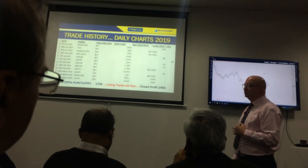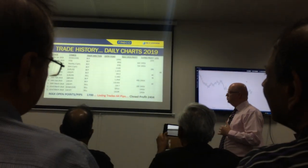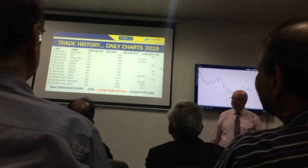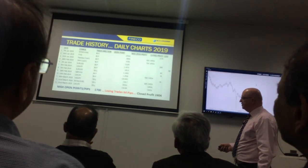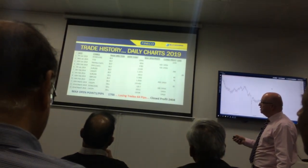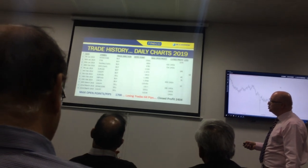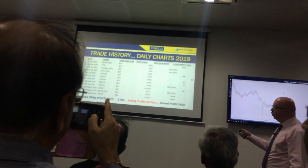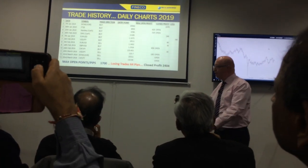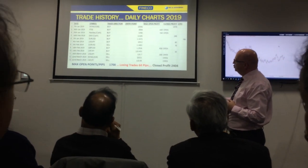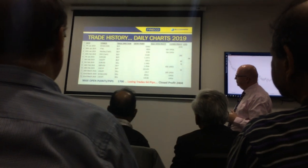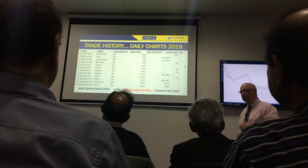We've roughly got a maximum open pips of 1,700 left in the trades that are open. We have had one losing trade so far of 64 pips on all those instruments on the daily chart. We have closed profit of 2,404. That's, as we speak, on the DOW, FTSE, NASDAQ, DAX, EURUSD, USD/Yen, GBP/USD, Swiss franc/Yen. So we're only talking about four currency pairs and a couple of indices.